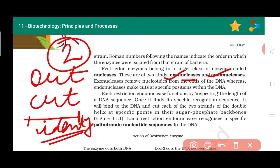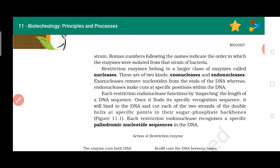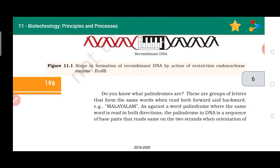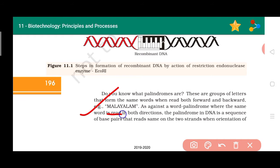The base pairs that are cut are called the recognition site, and the sequence is palindromic. I will explain what palindromic means. A palindromic sequence consists of words that read the same in forward and backward directions. For example, the word 'Malayalam' is given here as an example.